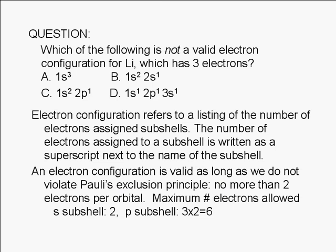We can see that choice A clearly violates Pauli's principle. It is not possible to have more than two electrons in the 1s subshell.